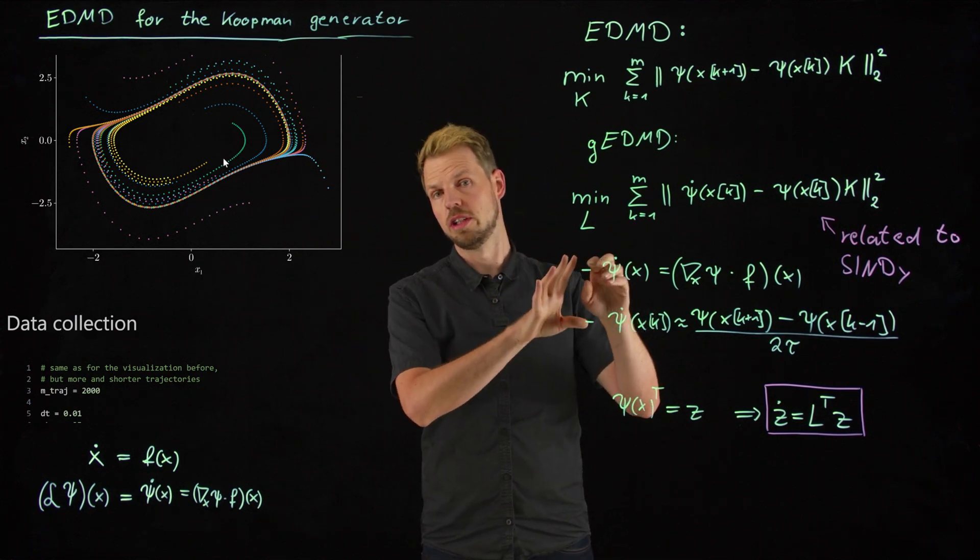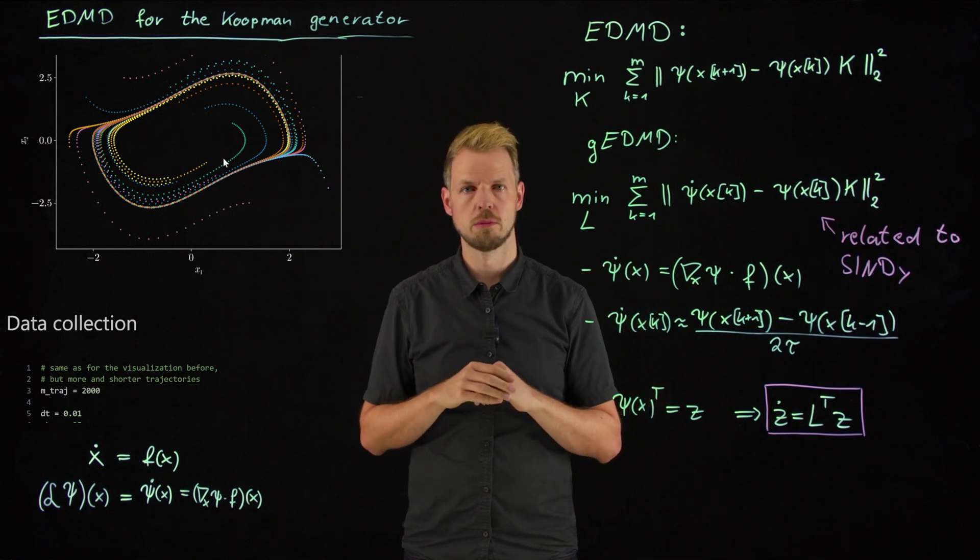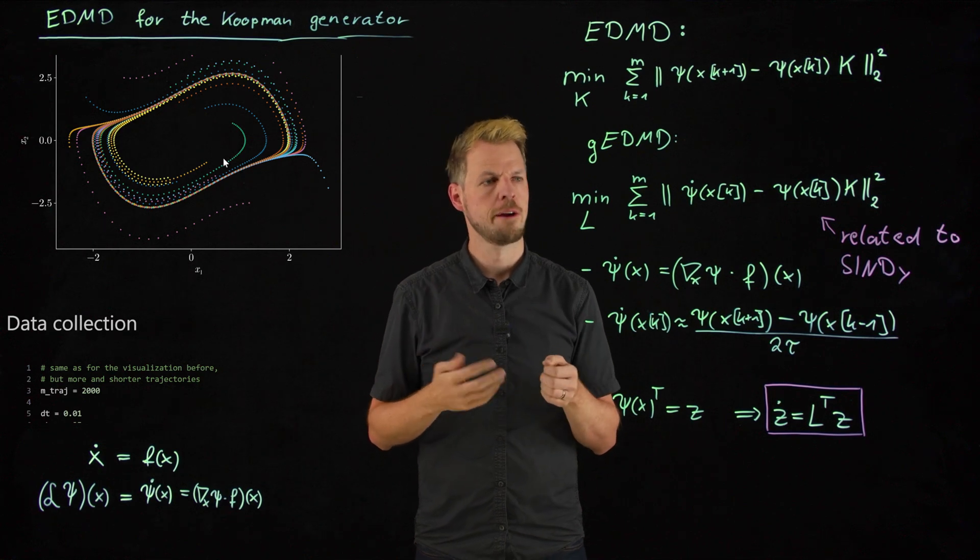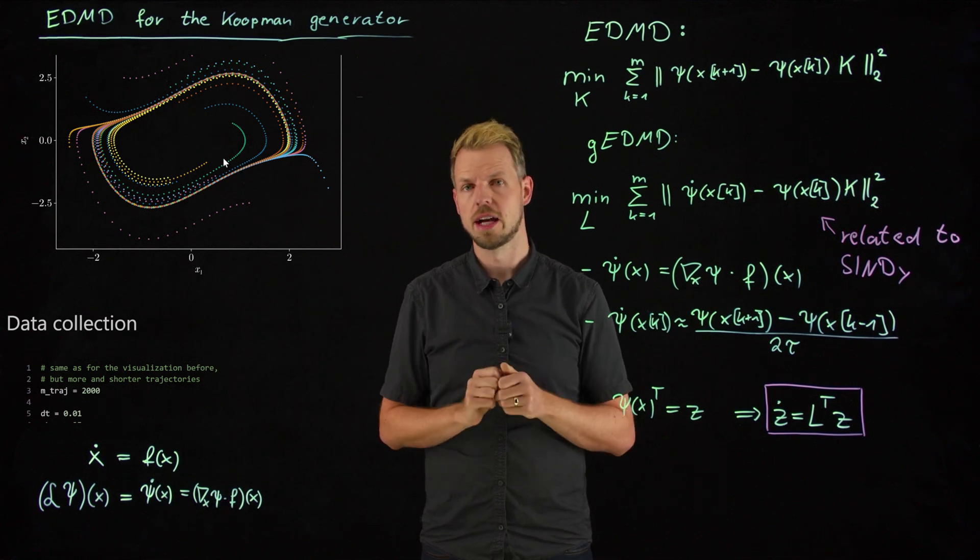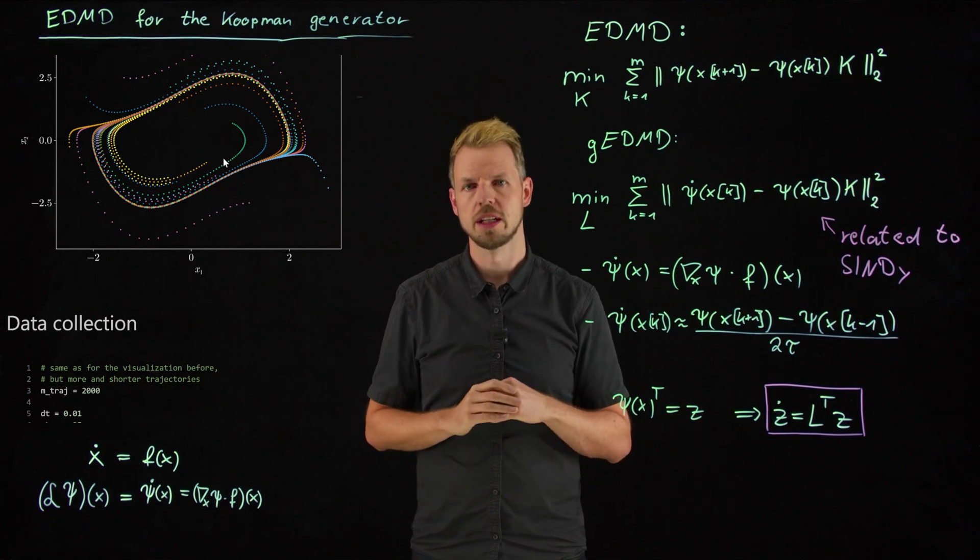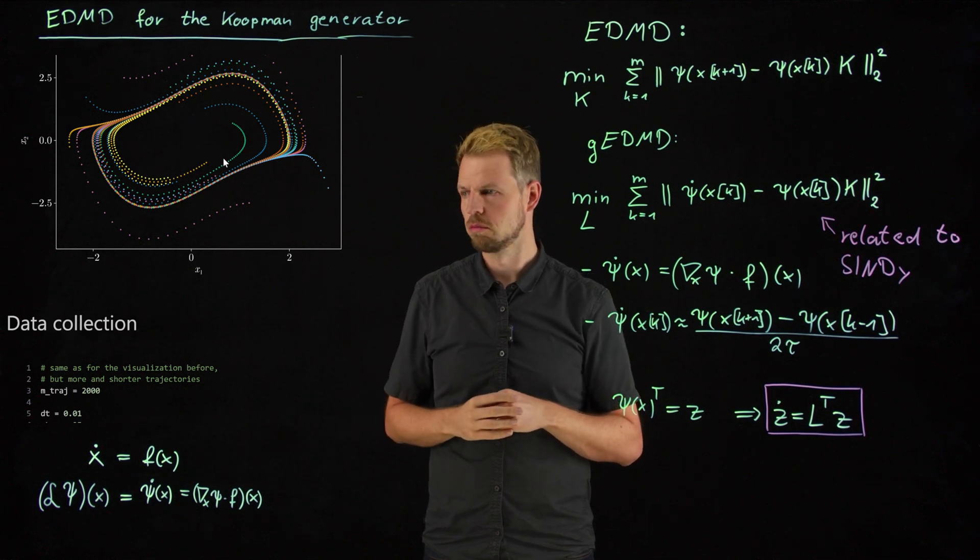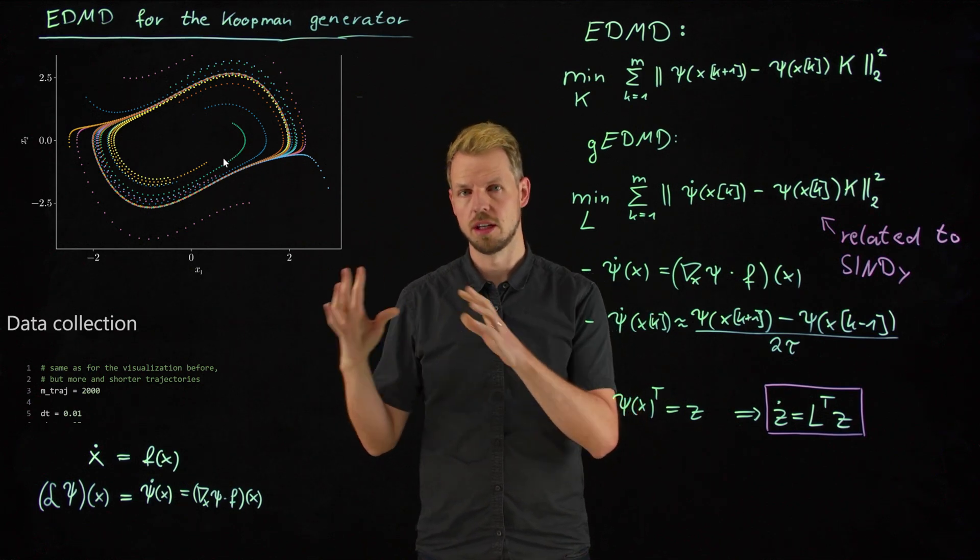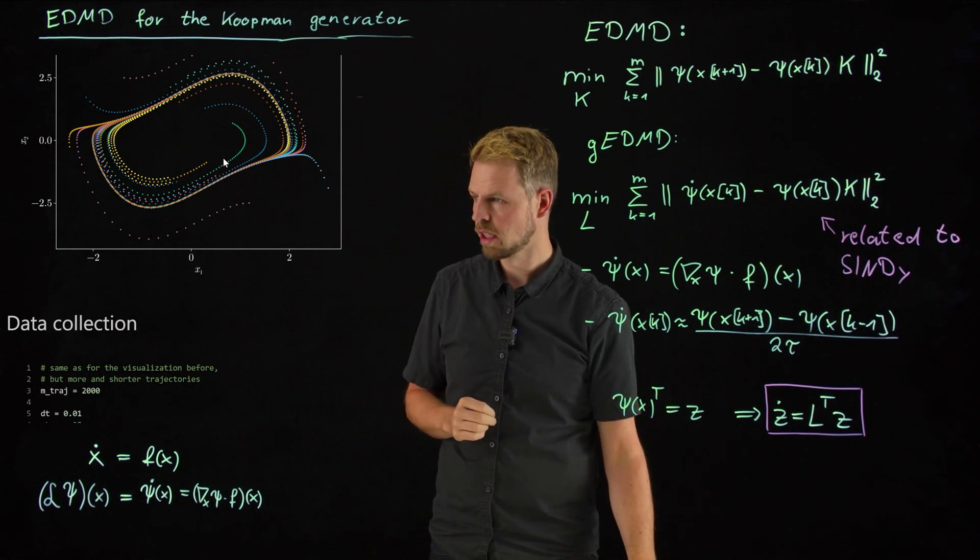And so what we will do is we collect data more than these sample trajectories and use EDMD, and then use generator EDMD, and compare the two models both in terms of prediction accuracy, as well as the eigenvalues. I'm not going to study the eigenfunctions, but as the theory suggests, they are identical as well. So let's have a look.